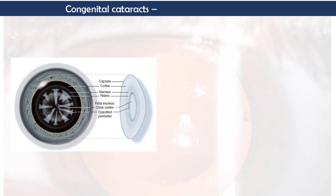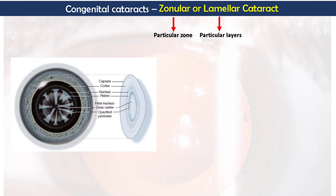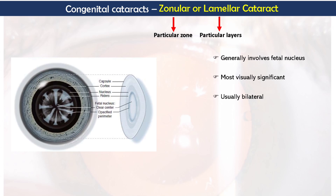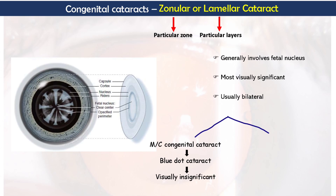Next in the list are zonular or lamellar cataracts. Zonular means a particular zone and lamellar means particular layers. Zonular cataract is present in a particular zone or layers and generally involves the fetal nucleus of the lens. This is the most common congenital or developmental cataract that is visually significant — it affects vision — and is usually bilateral. Note that blue dot cataract is the most common congenital cataract overall but is visually insignificant, whereas zonular cataract is the most common congenital cataract that affects vision.